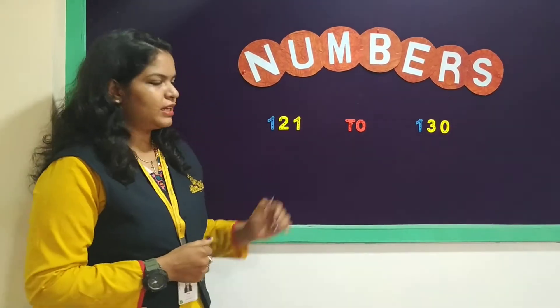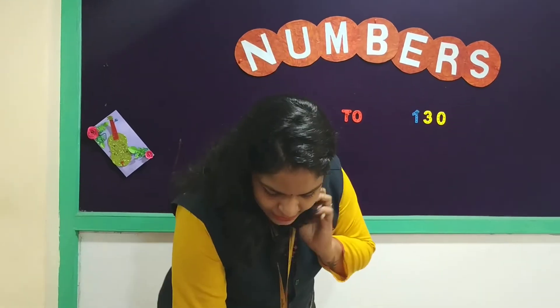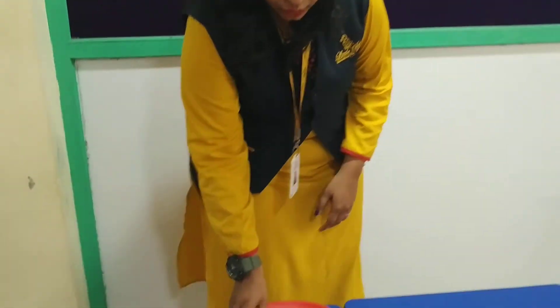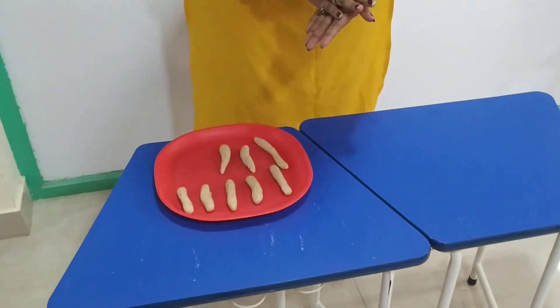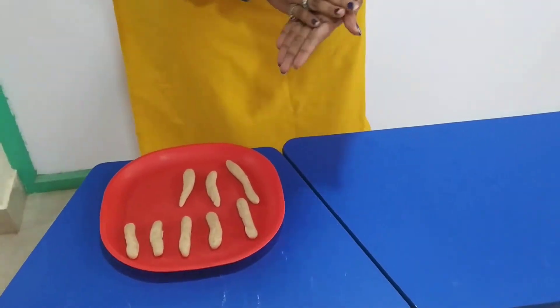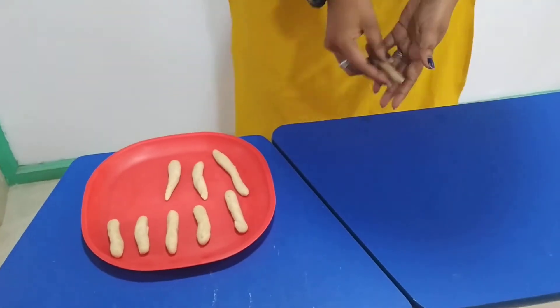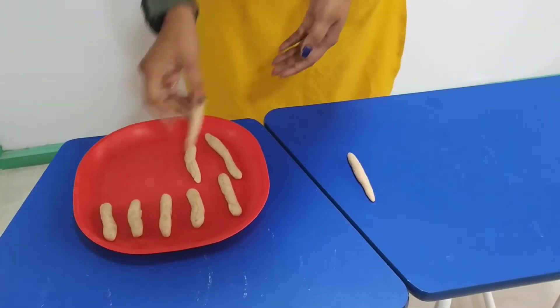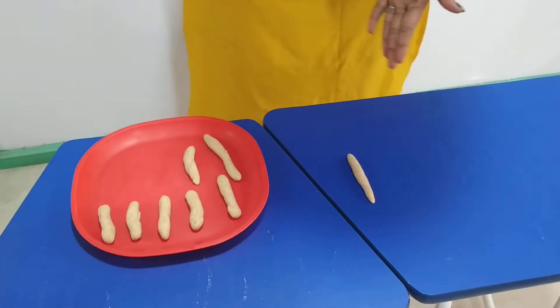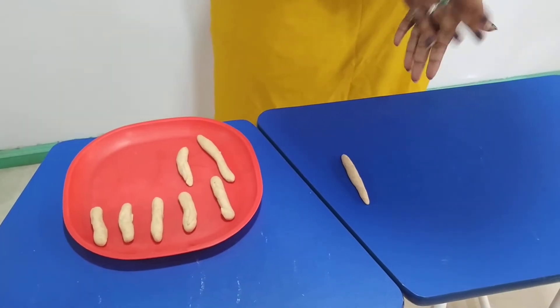So for these numbers, we will make an activity. For the activity, I have used a door. So with the help of this door, we will make the numbers. You have to guess what number is this.